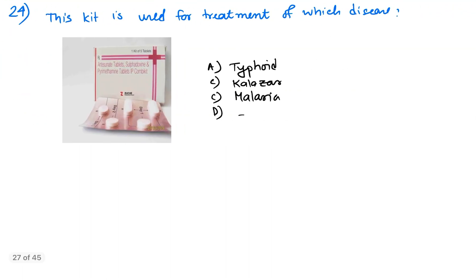Next, question number 24. This kit is used for treatment of malaria. As you can see here, this kit contains RT-SUNET, Sulfadoxine Pyrimethamine tablet. So this kit is used under national disease control program for treatment of malaria.